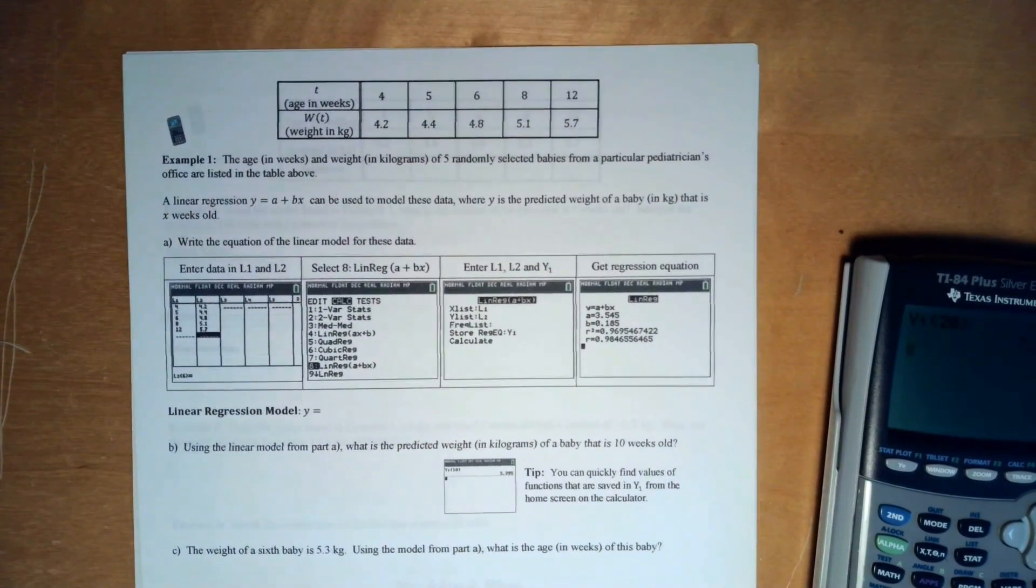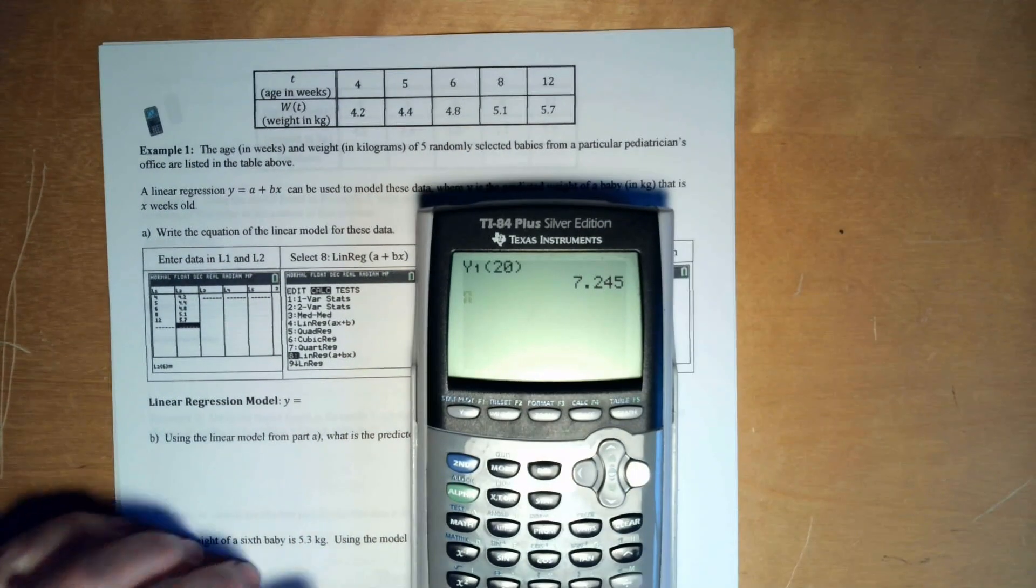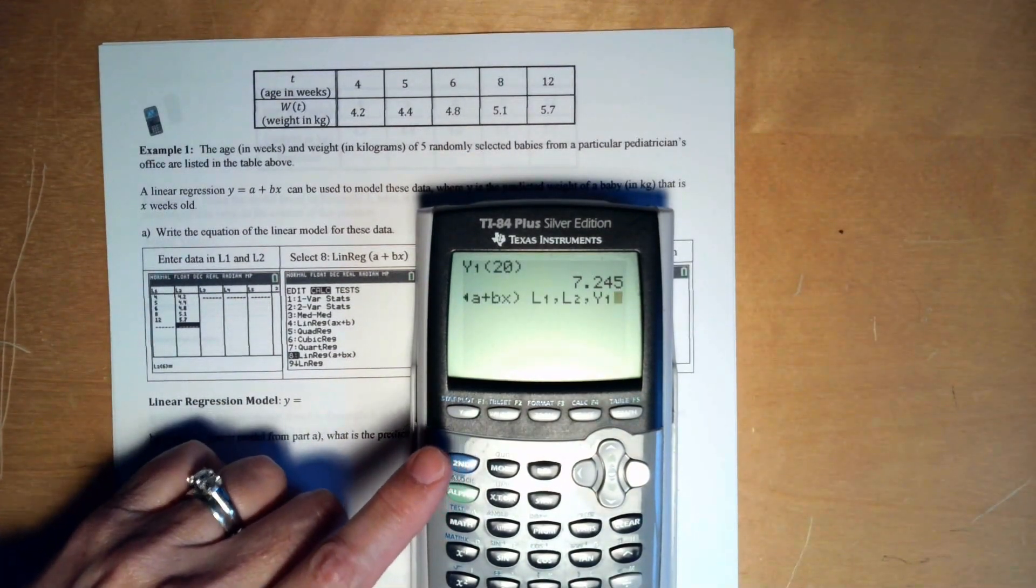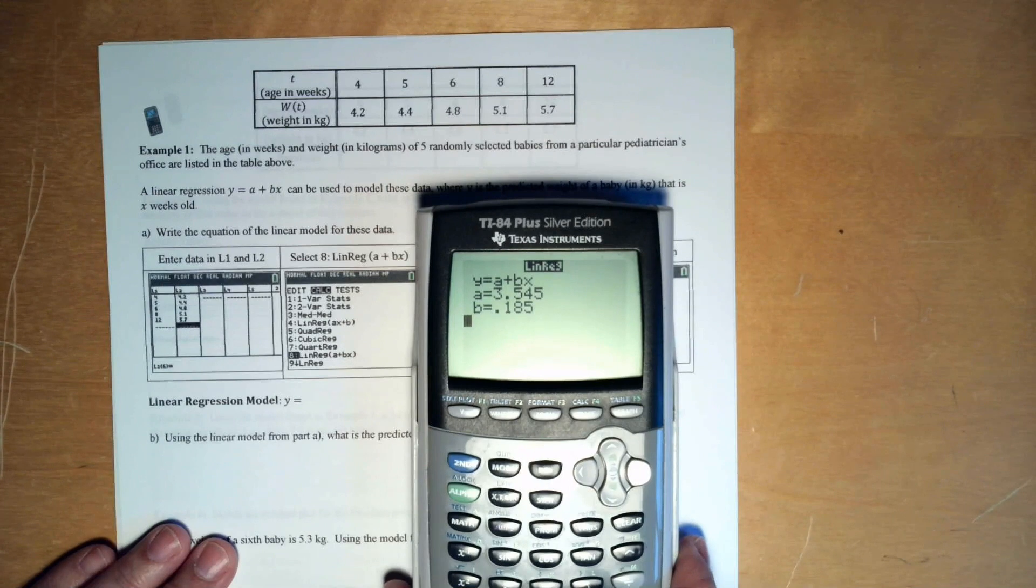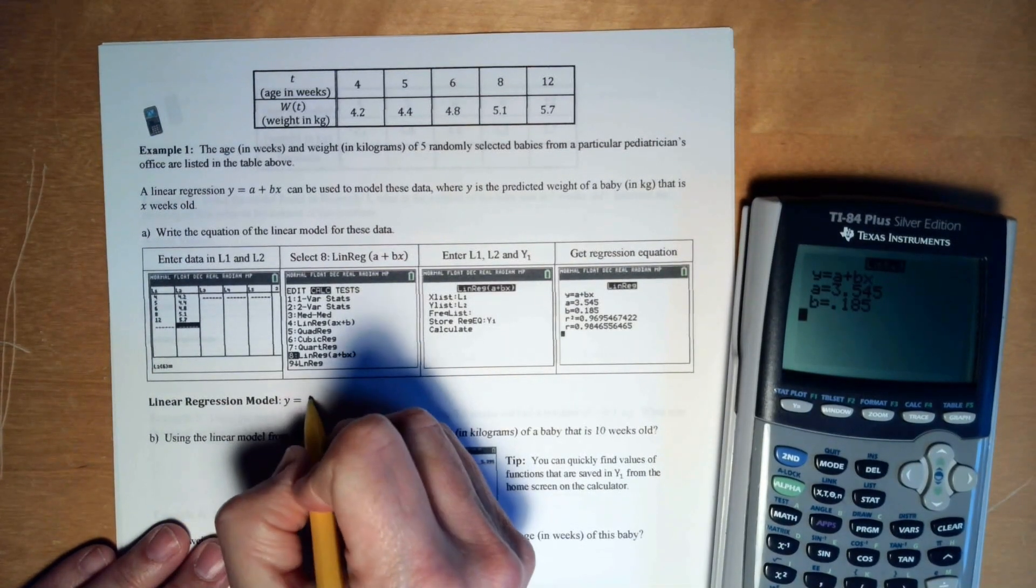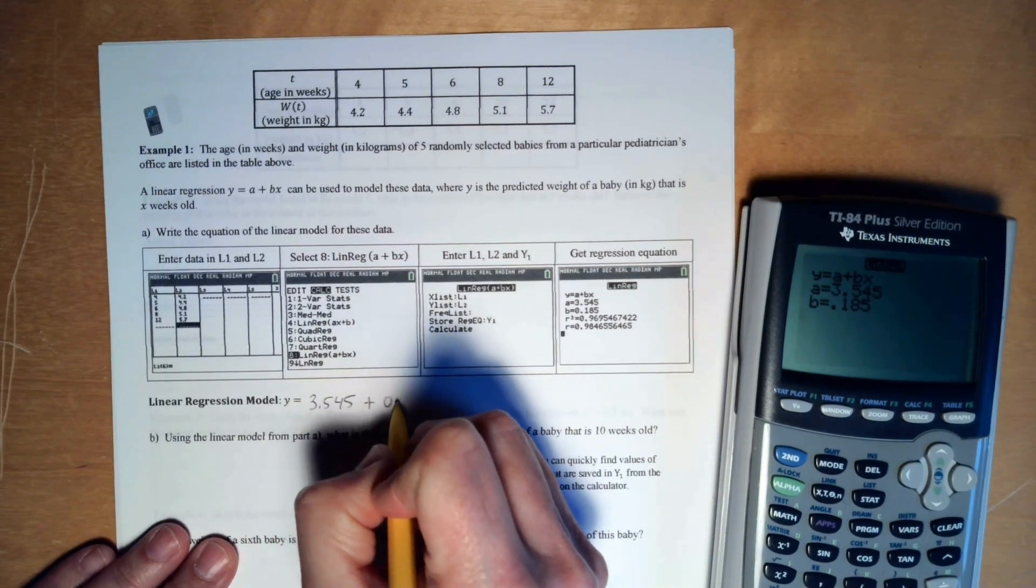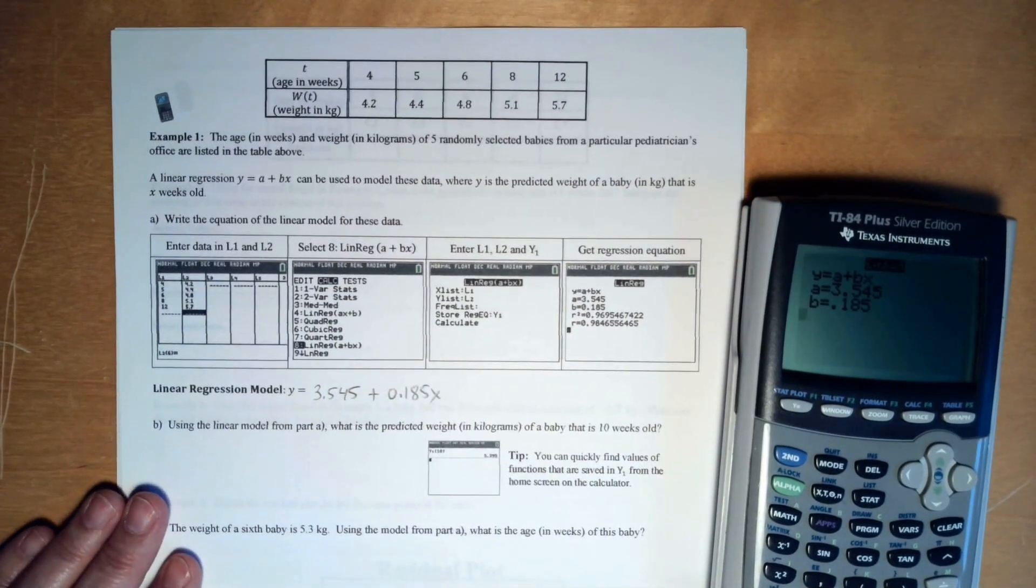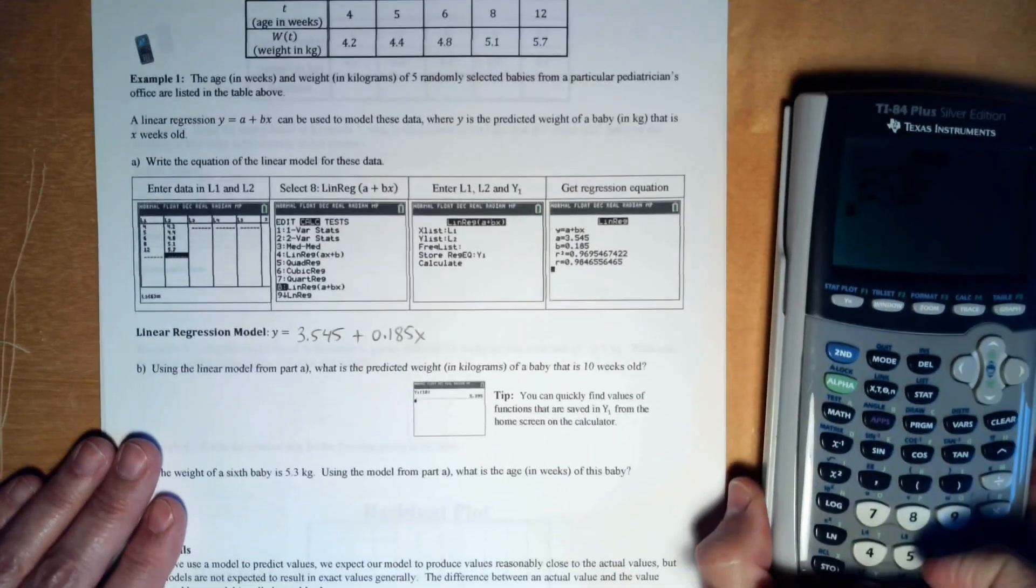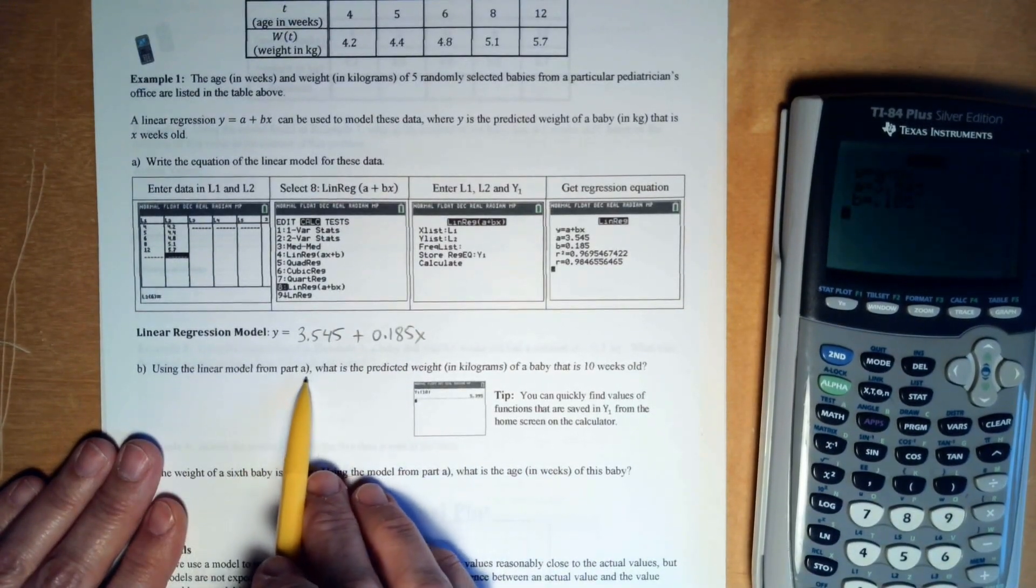Alright, so let's go to the questions. So basically covered the first page. And here's our linear regression model. If you do second enter, second enter, I'm going to get it. So it is 3.545 plus 0.185x. So there's my equation, y equals.